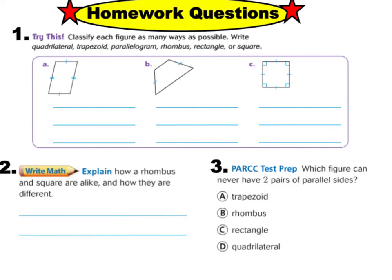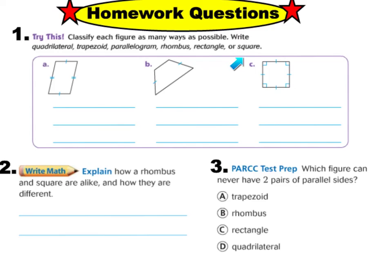Here are your homework questions for tonight. Remember everything we wrote about what makes each type of quadrilateral, then classify each figure as many ways as possible. If it's a quadrilateral, write quadrilateral. If it's a trapezoid, write trapezoid. If it's a parallelogram, write parallelogram. If it can be a rhombus, write rhombus. If it's a rectangle, write rectangle. And if it's a square, write square. Some items may have more than one label, so refer back to your notes for A, B, and C.